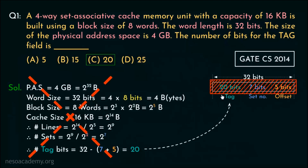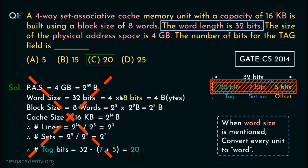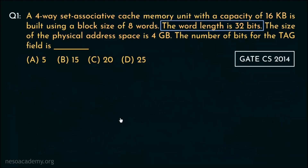Why is it wrong? Because if you remember, word is the smallest addressable memory unit. Therefore, since the word length is mentioned, we need to convert every unit to words. Instead, we converted all of them into bytes. So let me show you the correct derivation process.